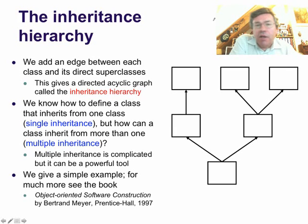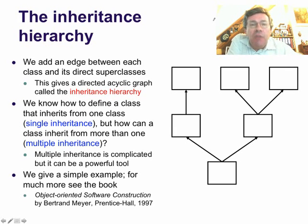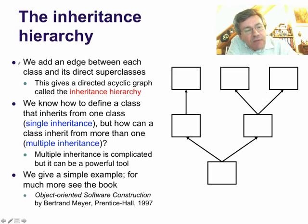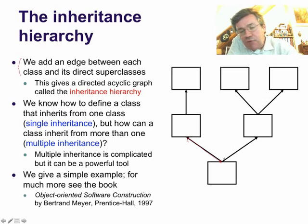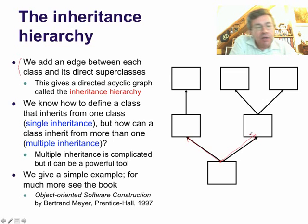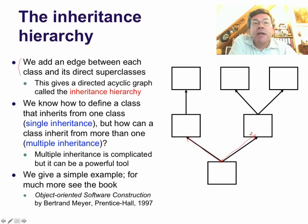Now let's take a look at the relationships between all the classes. To do that, let's add an edge between each class and its direct superclasses. This gives a directed acyclic graph called the inheritance hierarchy.